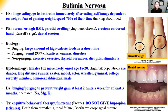Bulimia involves binging and purging or non-purging types. Binging means consuming large amounts of high-caloric foods in a very short time, then purging — vomiting 90% of the time, but also using laxatives, enemas, or diuretics. The non-purging type involves excessive exercise, thyroid hormones, diet pills, or stimulants. History includes binge eating high-caloric foods, going to the bathroom immediately after eating to vomit, and self-image dependent on weight.